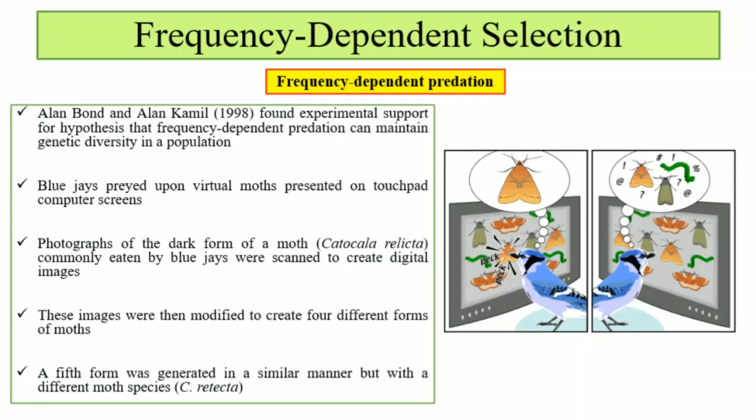Alan Bond and Alan Camel experimented in 1998, which supported the hypothesis that frequency-dependent predation maintains genetic diversity within a population. The blue jays feed on moths — specifically the most common form, the dark moth, Catocala relicta. Images were scanned and made into digital images, and four different forms of moths were generated.